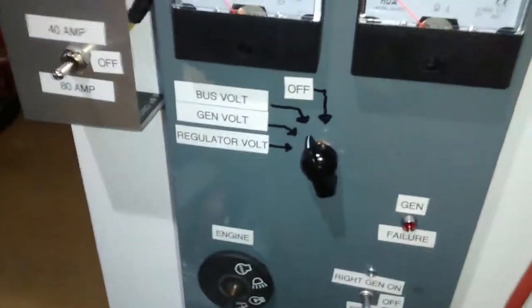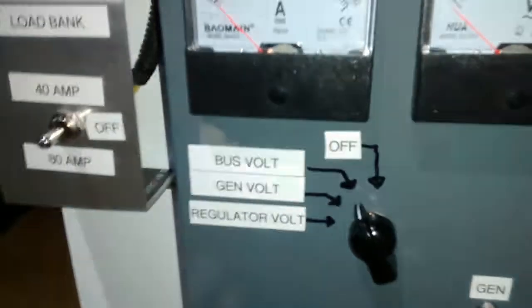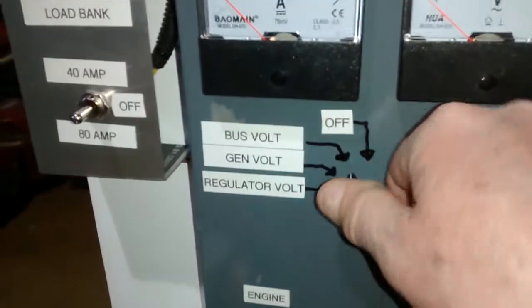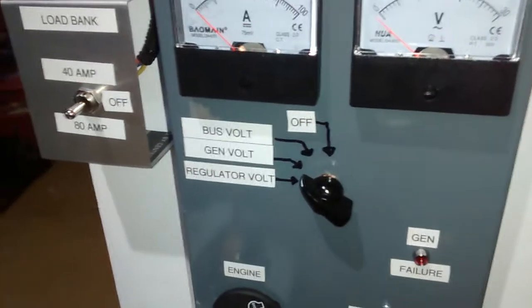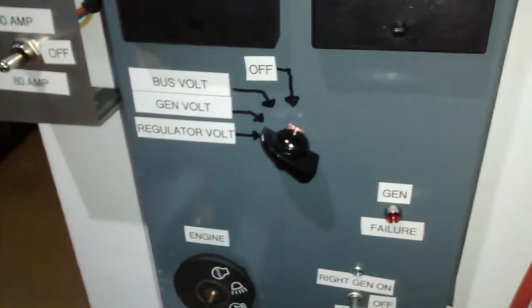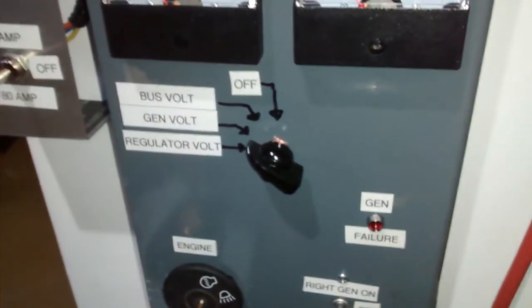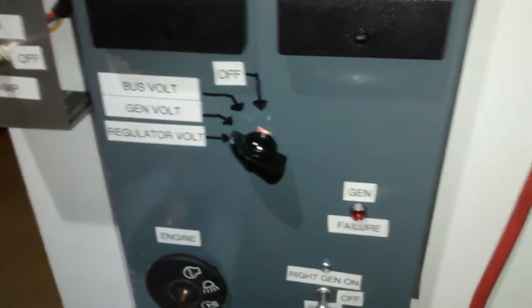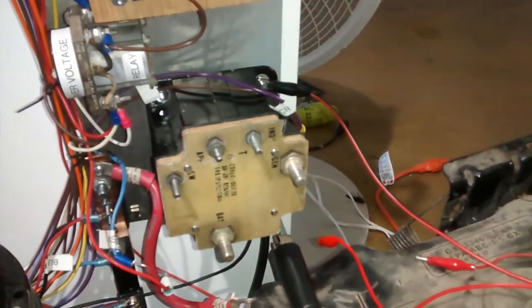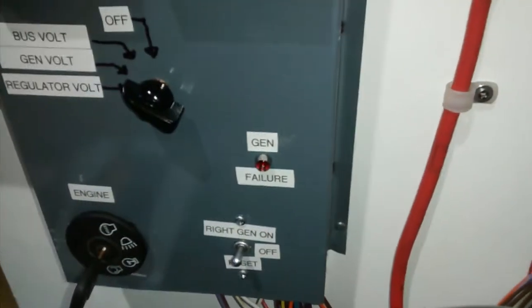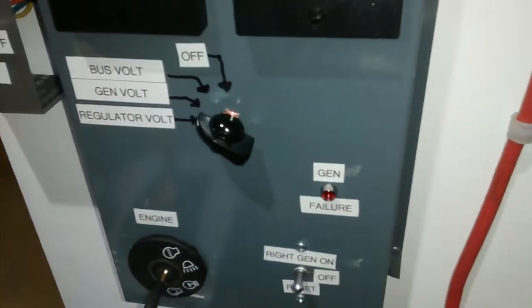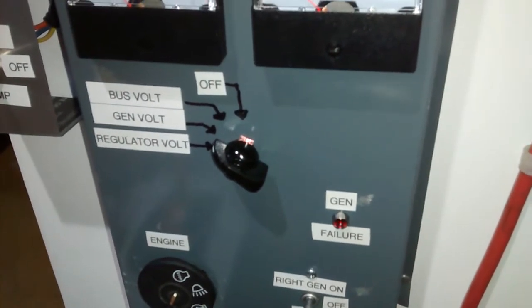Having said that, up in the plane there's a rotary switch that allows you to monitor the voltage between the bus voltage and the generator voltage. In flight, if the generator failure light is out, those two should read the same. If they were different for some reason, it could be that the reverse current contactor had opened up and was not allowing the generator power to go to the generator. I guess it's possible a bulb could have failed, so maybe on a long flight scan those two every once in a while just to make sure that they're both reading the same voltage.